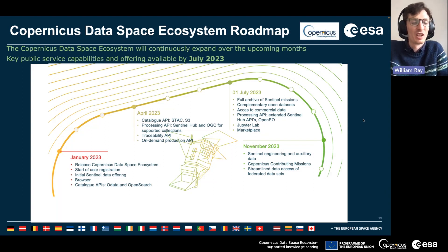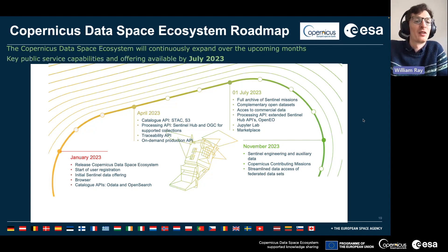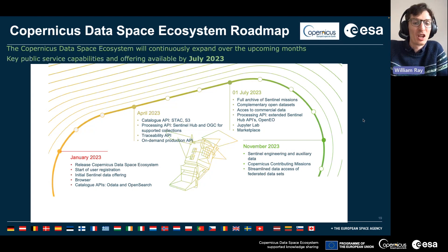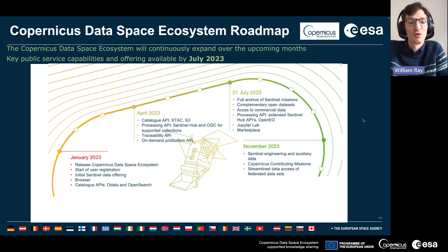Here's a more detailed roadmap. In April 2023 we released additional API support, including the Catalogue API, the Processing API, and connections into Sentinel Hub APIs. Additional features will be added throughout the year — for instance in July the full archive of Sentinel missions will be available, along with additional APIs as well as computing power in JupyterLab environments. It's really exciting as the ecosystem continuously expands over the upcoming months.